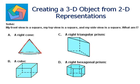Let's see right triangular prism. The top view here is a triangle, but we need the top view to be a square. So this also cannot be the answer. Then let's look at the right hexagonal prism. Here the top view is a hexagon and we need the top view to be a square, so this also cannot be our answer option.